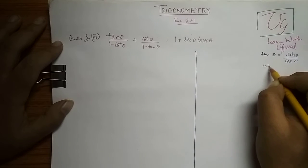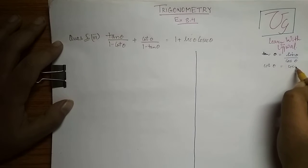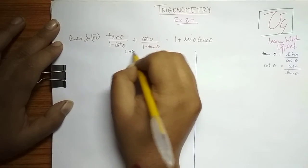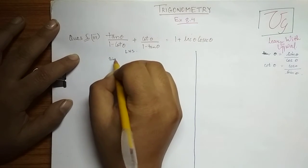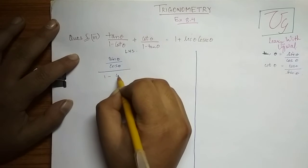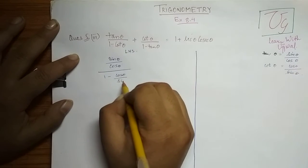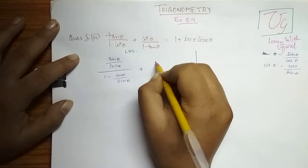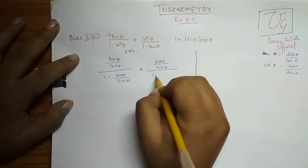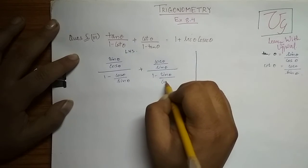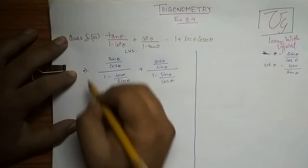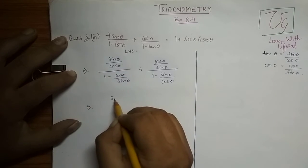And cot θ is the reciprocal of tan θ, so it will become cos θ upon sin θ. Now just simply put these values in our LHS. What we will get is: sin θ upon cos θ, upon 1 minus cos θ upon sin θ, and plus cos θ upon sin θ, upon 1 minus sin θ upon cos θ.